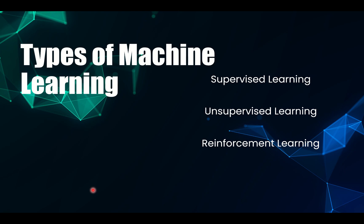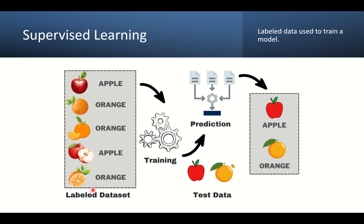There are three types of machine learning: supervised learning, unsupervised learning, and reinforcement learning. In supervised learning, the model is trained with labeled data — it already knows the correct answer. It learns by mapping the input to output based on examples.